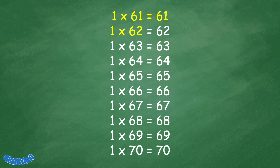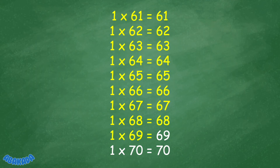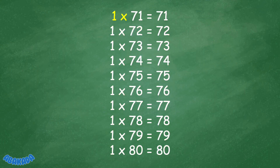1 times 62 equals 62. 1 times 63 equals 63. 1 times 64 equals 64. 1 times 65 equals 65. 1 times 66 equals 66. 1 times 67 equals 67. 1 times 68 equals 68. 1 times 69 equals 69. 1 times 70 equals 70. 1 times 71 equals 71. 1 times 72 equals 72. 1 times 73 equals 73.